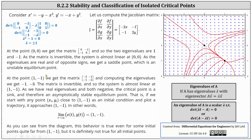Now we consider the second critical point (1, −1), which results in the Jacobian matrix with entries −2, 1, 1, −2. Computing the eigenvalues gives λ = −1 and λ = −3. Once again the Jacobian matrix is invertible, so the system is almost linear at (1, −1). Because the eigenvalues are real and both negative, the critical point is a sink and therefore an asymptotically stable equilibrium point. That is, if we start with any point (xᵢ, yᵢ) close to (1, −1) as an initial condition and plot a trajectory, it approaches (1, −1), meaning the limit as t approaches infinity of (x(t), y(t)) equals (1, −1).